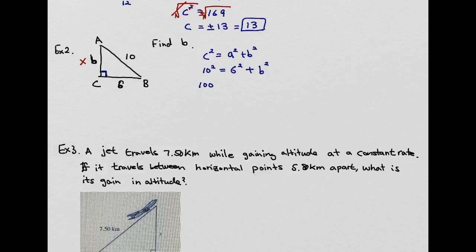Working it out: 10 squared is 100, and that equals 36 plus B squared. To solve for B, subtract 36 from both sides: 100 minus 36 gives 64, so 64 equals B squared. Taking the square root of both sides gives plus or minus square root of 64. The square root of 64 equals 8. Again, because we're talking about distance, we cannot use the negative value, so B equals positive 8.